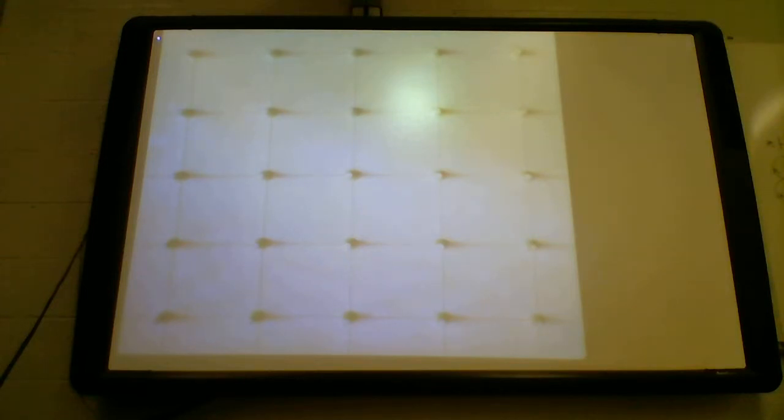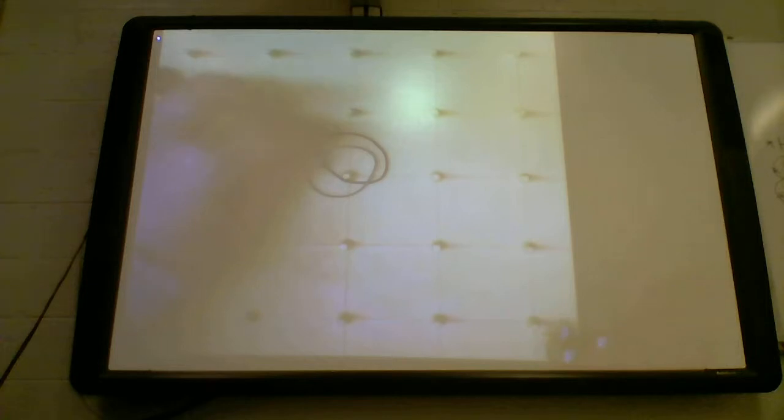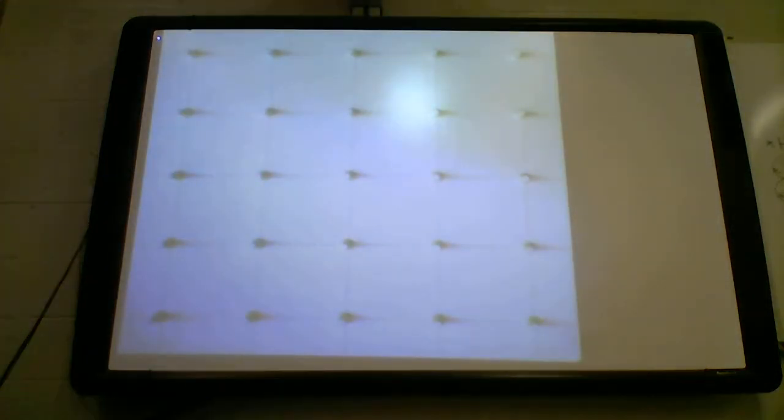We are going to use a geoboard and rubber bands to show similar and congruent figures. Congruent figures are equal in size and shape, while similar figures are only similar in shape.